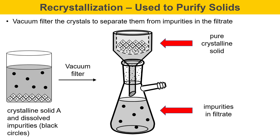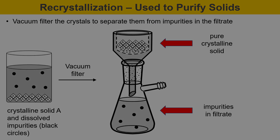In reality, recrystallization isn't perfect, and although we hope that all of the A crystallizes out, there will be a little bit that gets lost in the filtrate. Recrystallization is a bit of a compromise — you get a more pure solid, but you lose a little bit of yield.